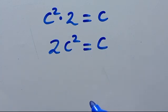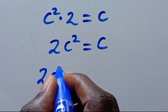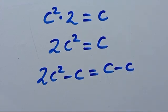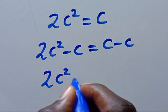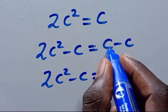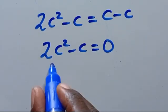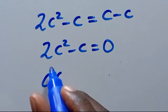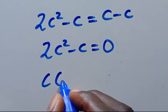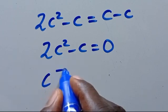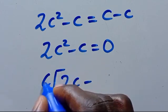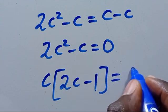From here, let's take this C to the other side by subtracting, so we have 2C squared minus C equals 0. What is common between 2C squared and C is C — we can factor it out to get C times open parenthesis 2C minus 1 equals 0.